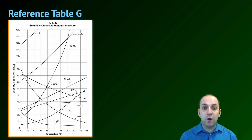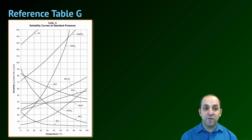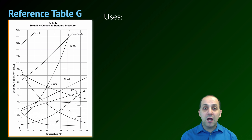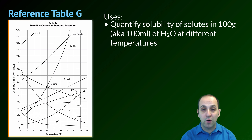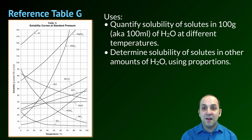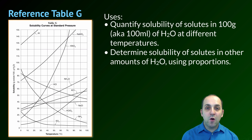The final thing we're going to learn in this video is how to use reference table G. Reference table G is just a bunch of solubility curves for particular solutes in aqueous solution at standard pressure. It has a couple of uses for us: the first is to quantify the solubility of solutes in 100 grams of water at different temperatures, and the second is to determine the solubility of solutes in other amounts of water using proportions. Let's go and take a look at some examples of using reference table G.